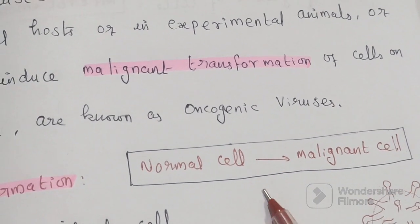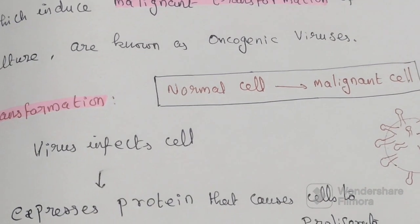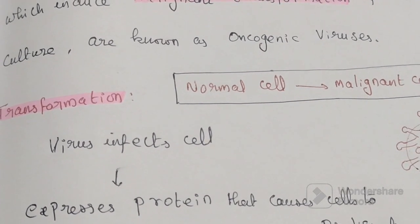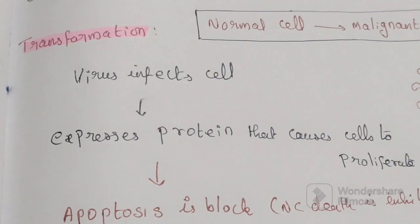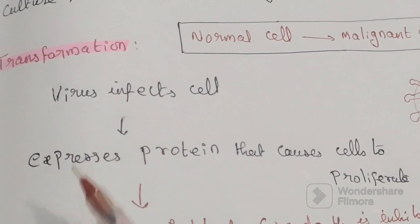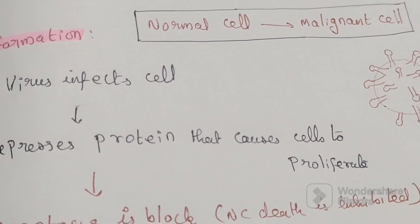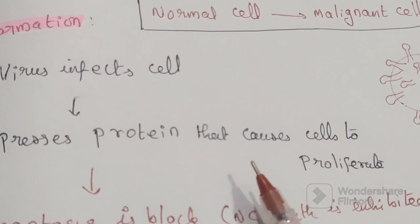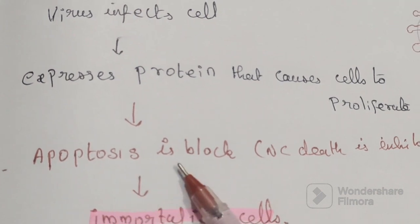Simply, a normal cell can transform into a malignant cell. How does that transformation take place? First, the virus infects a normal cell. As a result, it expresses proteins that cause the cell to proliferate. Additionally, apoptosis is blocked.